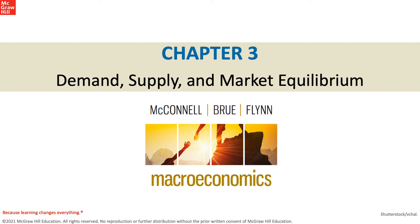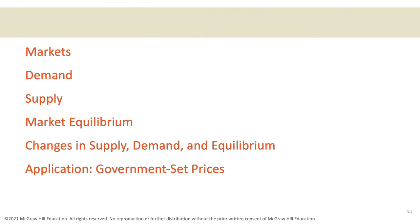This chapter about supply and demand and market equilibrium is the most important chapter you'll ever study in economics. It talks about why we buy what we buy, what causes us to buy more of something, why sellers sell what they sell, what causes them to want to sell more or less of a good or service, and how those two things play together to create market equilibrium price and quantity. This gives us an overview for the chapter — we're going to cover all of this in great detail.